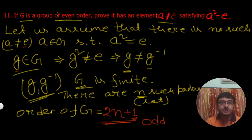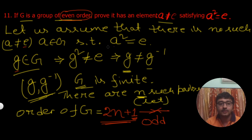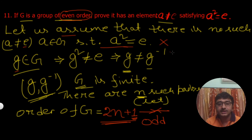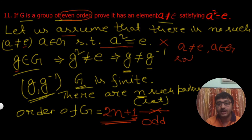Now if you look at this carefully, 2n plus 1 is odd — but it is given that G is a group of even order. So we have arrived at a contradiction. This means our assumption — that there is no such A in G with A squared equal to E — is wrong. Therefore, there must exist an element A, not equal to E, with A in G such that A squared equals E.